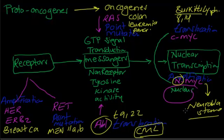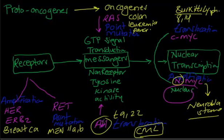The nuclear proto-oncogenes are C-Myc and N-Myc. The abnormality in C-Myc is translocation, in RET is point mutation, and in ABL is translocation. RET is responsible for receptors, ABL for non-receptor tyrosine kinase activity, and N-Myc for nuclear transcription — shared with C-Myc.